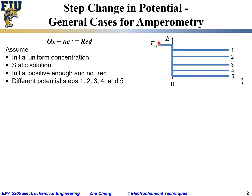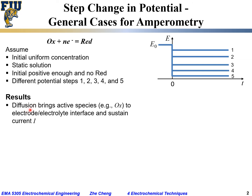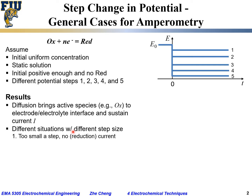Initially the system is at E0, positive enough, and then we apply negative potential biases in five different experiments, holding the potential at each value. As discussed, the reaction consumes oxidized species near the interface. Because there is no stirring, we rely on diffusion to bring the OX species to the electrode-electrolyte interface to sustain the current. With different potential step sizes, we get different current profiles corresponding to each potential.